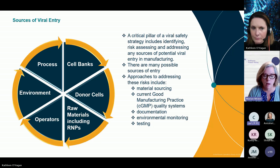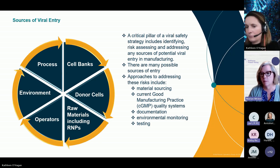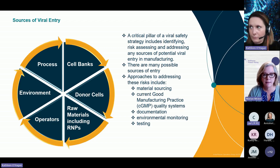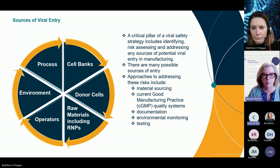Some of those opportunities for viral entry into the process are shown in the pie diagram on this slide. As you can see, there are many possible sources of viral entry: from raw materials and cell banks required for production, to helper viruses that might be in the process, all the way through the operator's environment and the process itself.